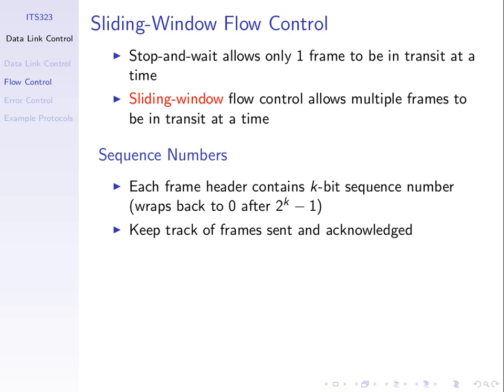Stop-and-wait can be inefficient in some cases because we send one data frame and if the propagation delay is large, the source spends a lot of time waiting for an ACK to come back — time spent not sending across the link. That's inefficient because we want to send as much data as possible across the link. So sliding window flow control is a variation — in fact a superset — where we allow sending multiple frames before waiting for an ACK.